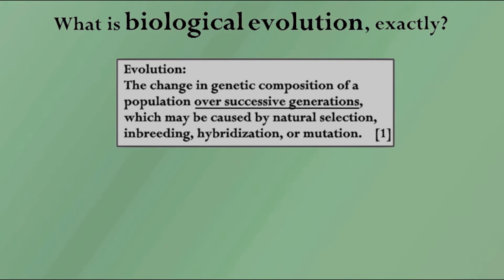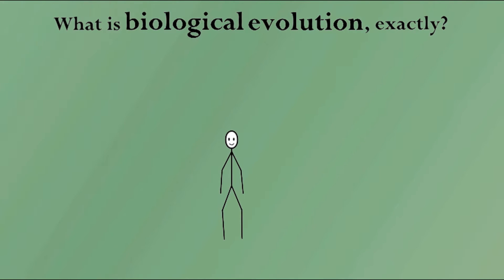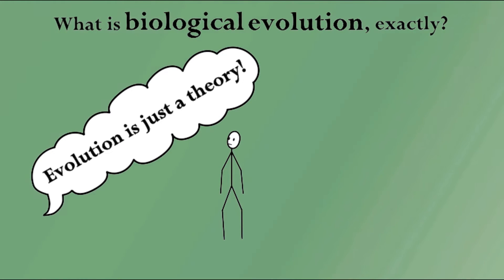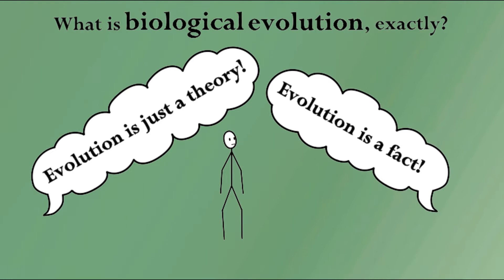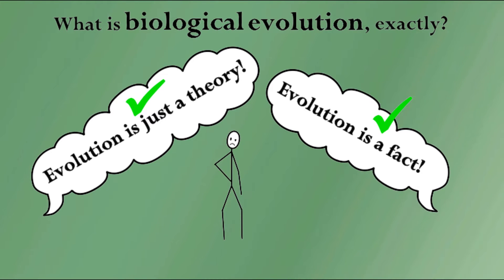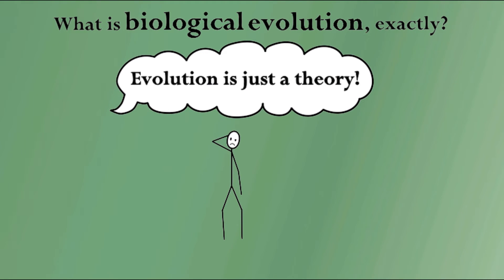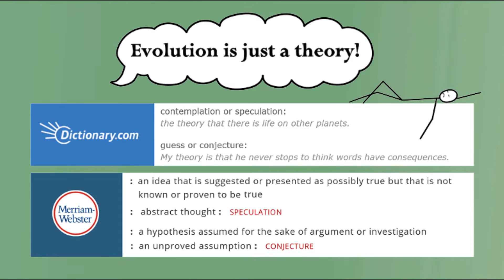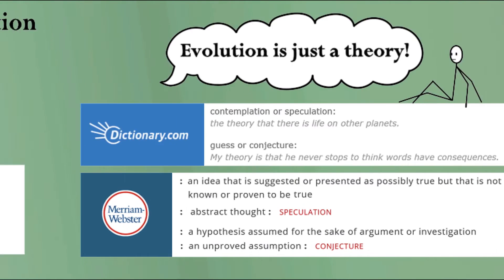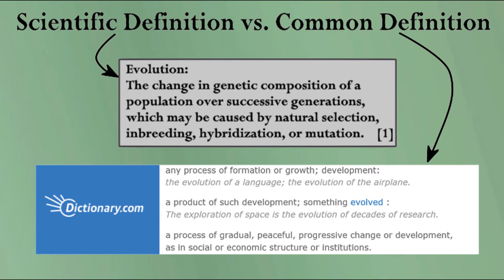More than likely you've heard the line 'evolution is just a theory' from some, while 'evolution is a fact' from others. So what's the real answer? Well, they're both right — evolution is both a theory and a fact. When we use the word theory in common language, we generally mean a guess or speculation. However, as we could see with the term evolution, the scientific definitions of terms can be vastly different than the common definitions of them. Try to be wary of this whenever you're involved in or listening to a conversation that deals with scientific topics.